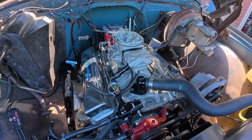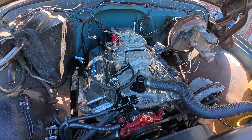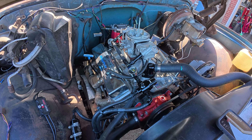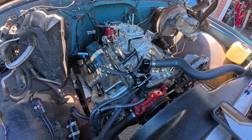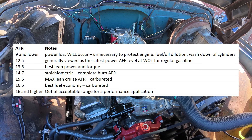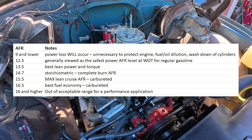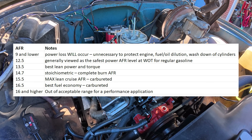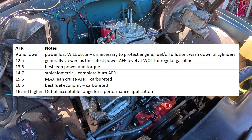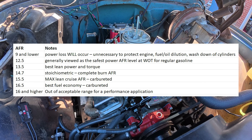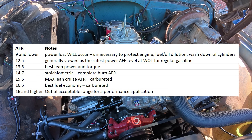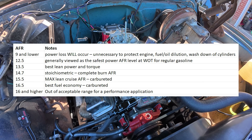An AFR of 9 and lower — you're not gaining anything. You're literally washing down the cylinders, diluting the oil, and losing ring seal. It's just not necessary, and you're not making a lot of power. On the lean side, 15.5 is my max AFR for cruise on this engine — if it's closer to 15 I'm happy, but 15.5 is the absolute limit. If the engine gets into 16:1, that might be okay on a stock application tuned for fuel economy, but for me, I will never tune outside of that range.